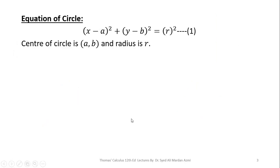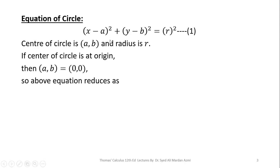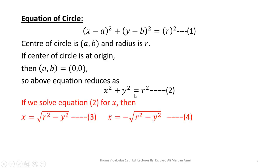Next we will learn something about the equation of a circle, which is important. The general equation of a circle is (x − a)² + (y − b)² = r², where the center is (a, b) and radius is r. If we take a = 0 and b = 0, the center shifts to the origin (0, 0), and this equation reduces to x² + y² = r². If we solve this for x, we have two possibilities: x = √(r² − y²) or x = −√(r² − y²).